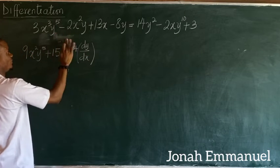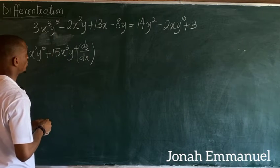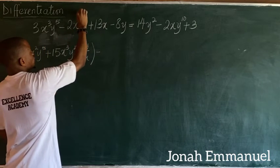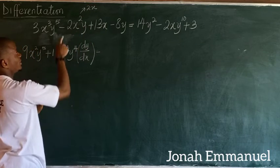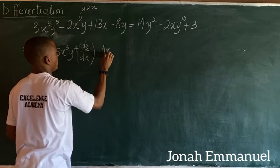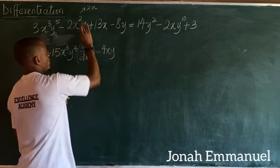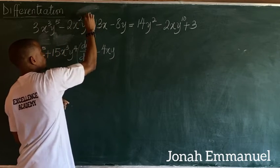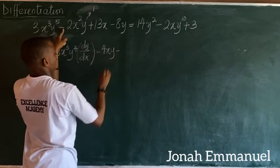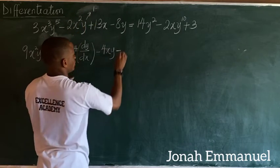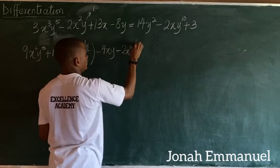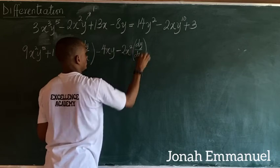Next, for the term minus 2x²y: differentiating x² gives 2x, so 2 times 2 gives 4x with y remaining. Then differentiating y gives 1, so the y-differentiated part is minus 2x² times 1, giving minus 2x² dy/dx.